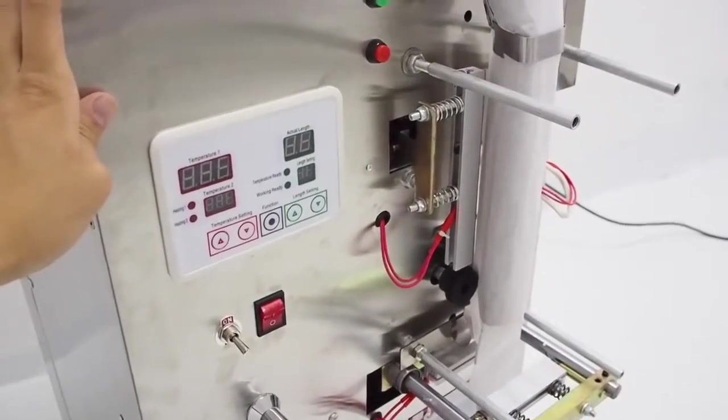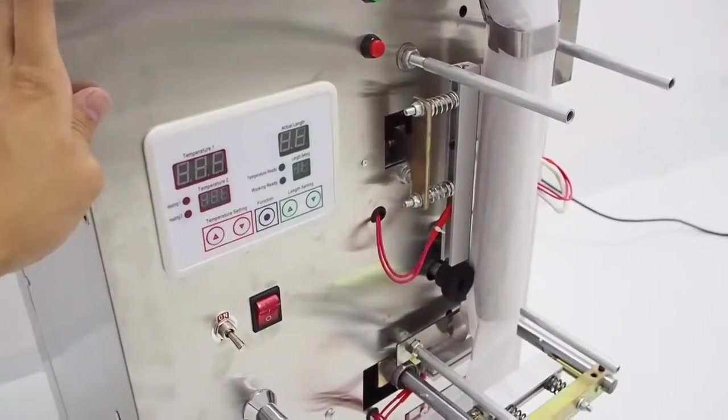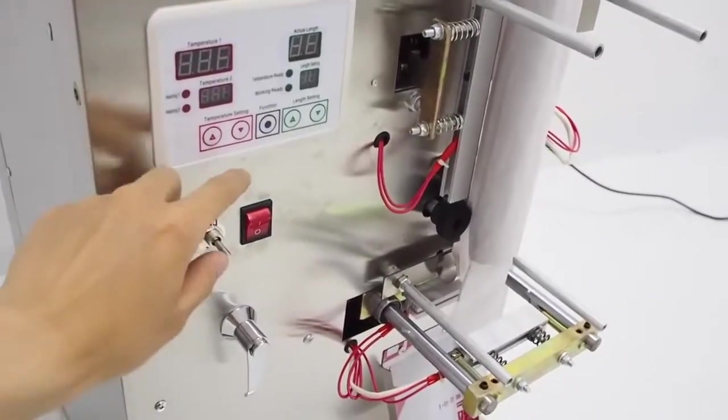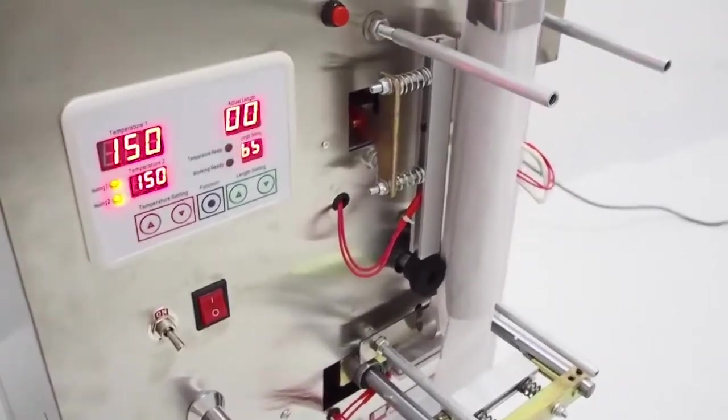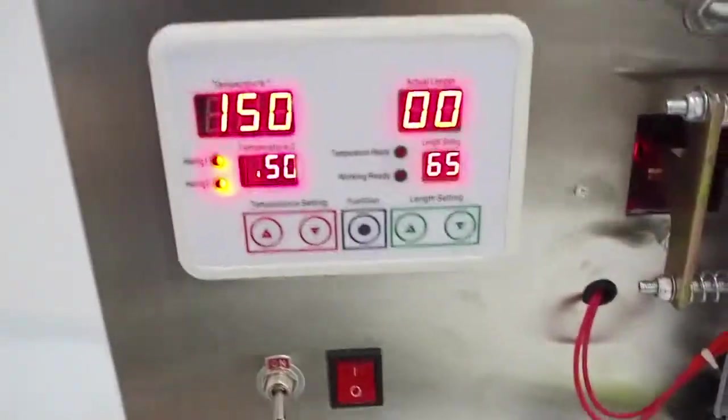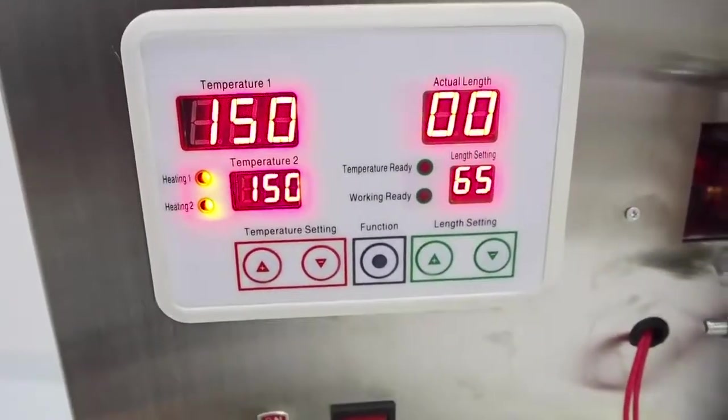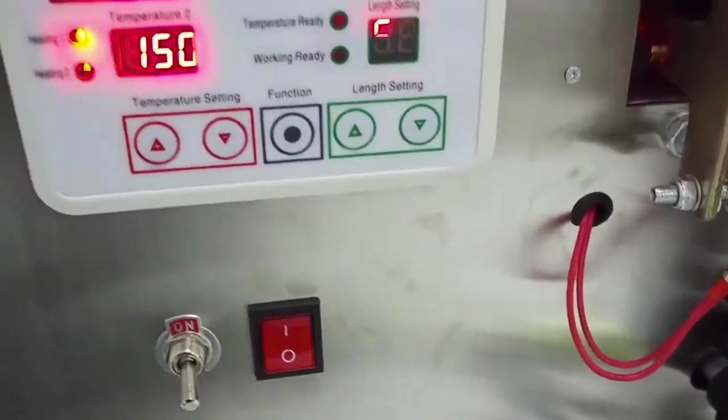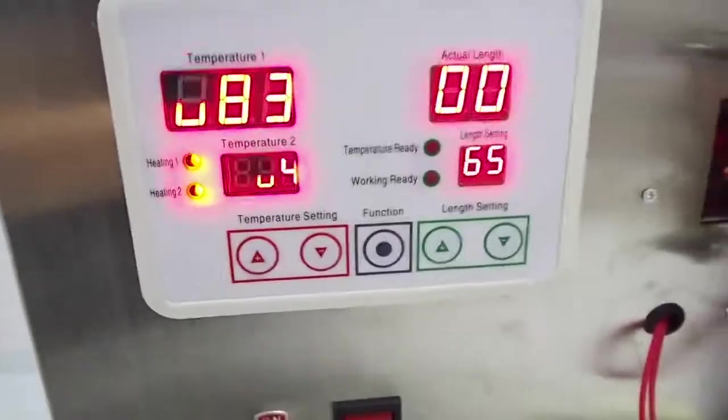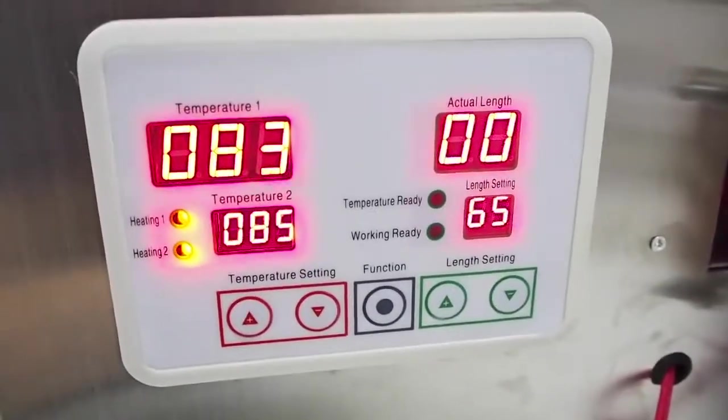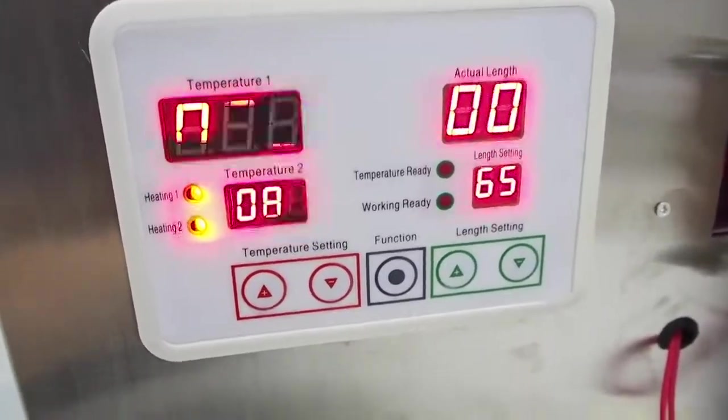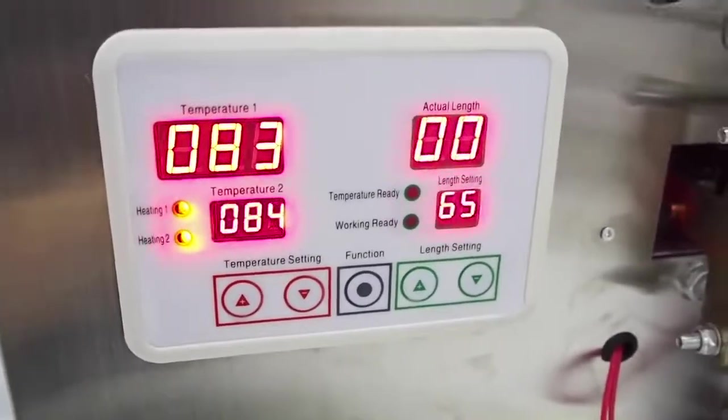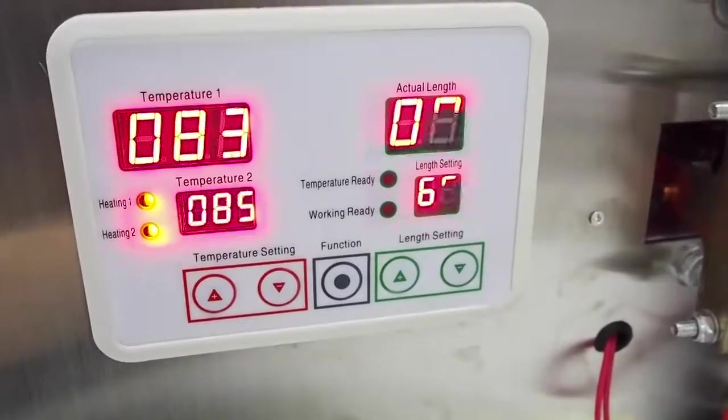Now all the basic settings are done. We can actually start testing this packing machine. Power on. And then you can see the temperature right now. It's set to 150 Celsius. The current temperature is about 83, 84. So it will take some time to let it heat up to 150.